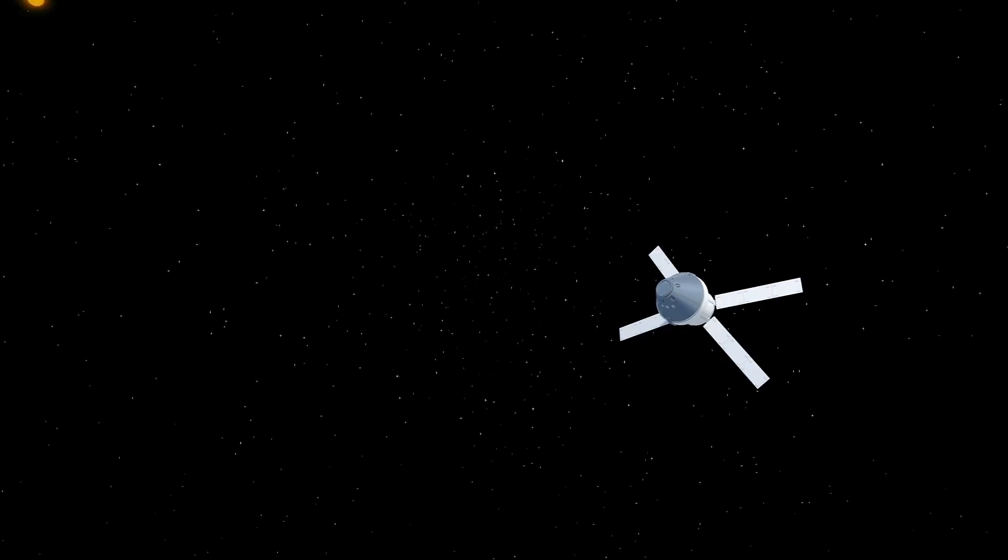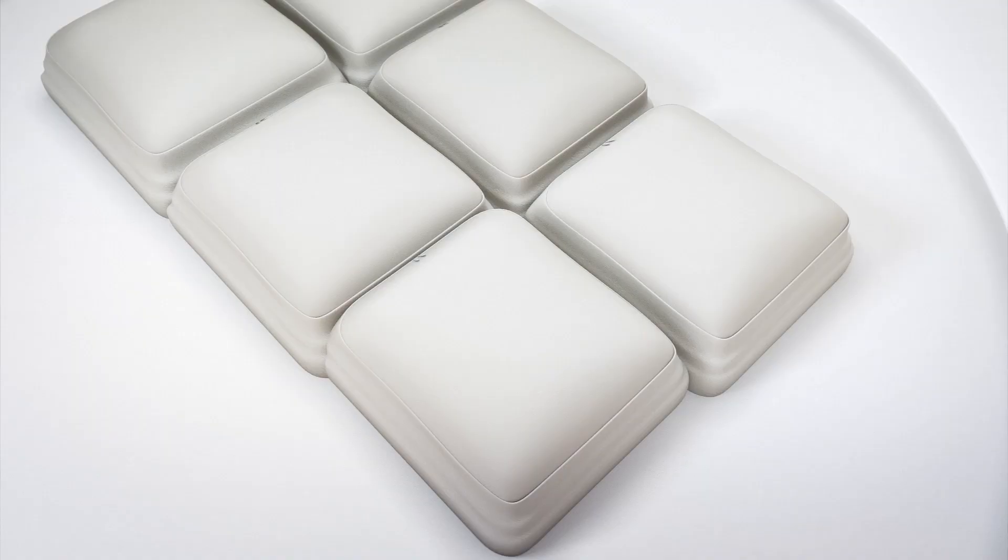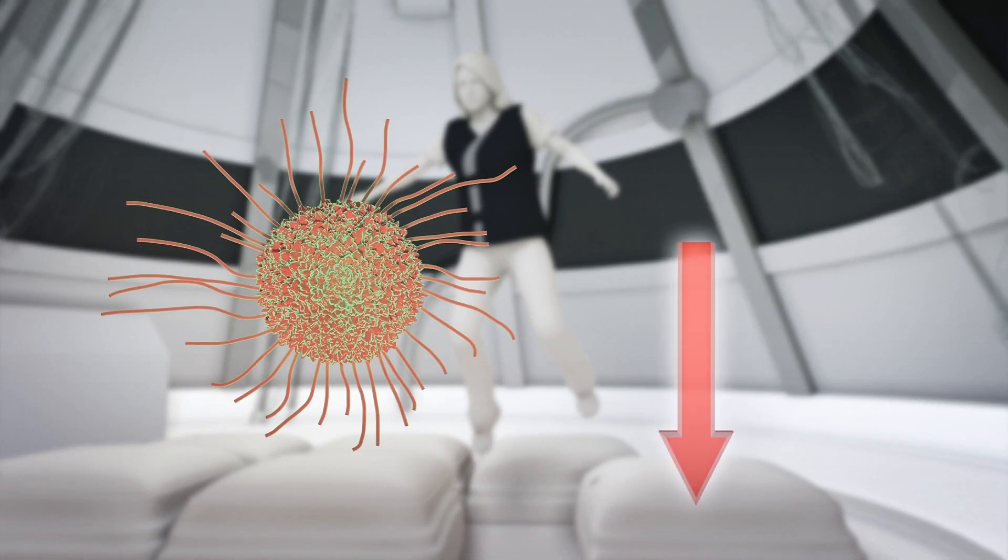StemRad claims its vest could allow astronauts to leave the Orion solar system storm shelters to perform important tasks during a solar storm. According to the company, the vest significantly reduces cancer and other fatal radiation exposure risks for astronauts.